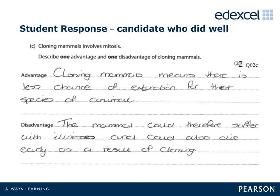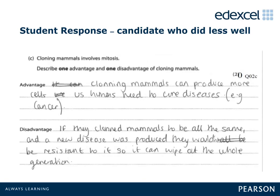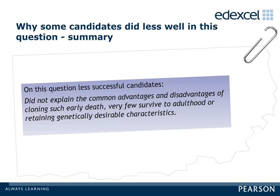On this question, more successful candidates were able to relate any inherited disease to the genetic disease, and were able to identify valid advantages and disadvantages such as preservation of endangered species. Less successful candidates were not able to relate any inherited disease to the genetic disease and were unable to identify valid advantages and disadvantages. Candidates who did less well were not able to explain common advantages and disadvantages of cloning such as early death, very few surviving to adulthood, or retaining genetically desirable characteristics.